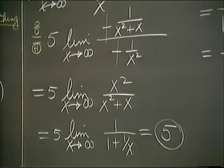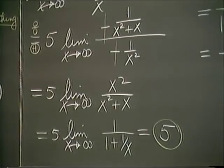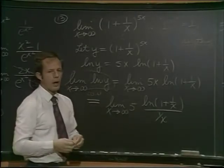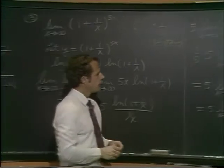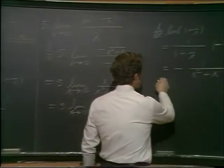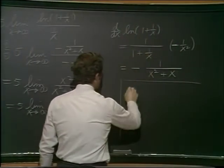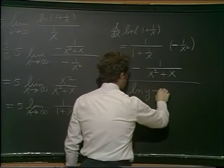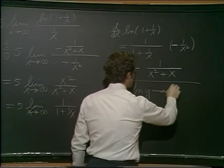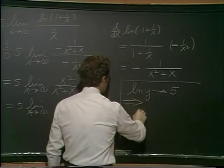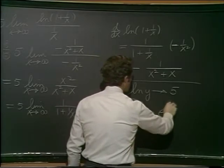What we found is the limit of log of y. So to finish off the problem, let's do it this way. We've said that or shown, I should say, log y goes to 5. That implies that y itself must go to e to the 5.